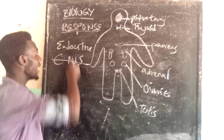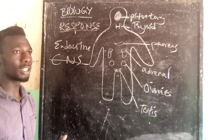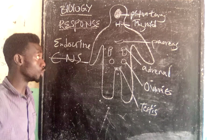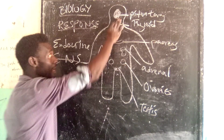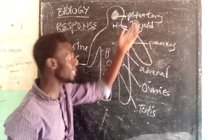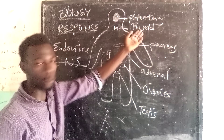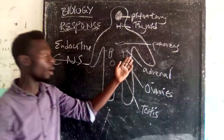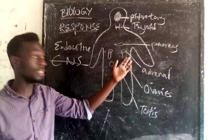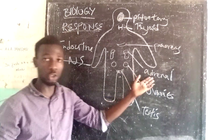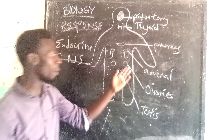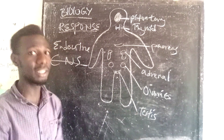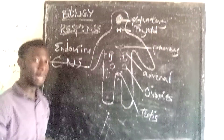Under the endocrine system, we have got glands which produce hormones. In our brain, we have the pituitary gland. In our neck, we have the thyroid gland. We have also the pancreas. On top of our kidneys, we have the adrenal gland. We have also the ovaries in females, as well as the testes in males.